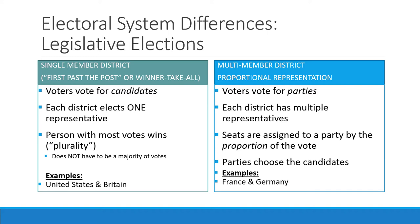It doesn't have to be a majority of the votes — it could just be a plurality — and whoever wins the most votes in one district earns the seat in the legislature. This is the system we have in the United States and also the system they have in Britain. So notice that even though the US has a presidential system and Britain has a parliamentary system, they both have the same type of electoral system.